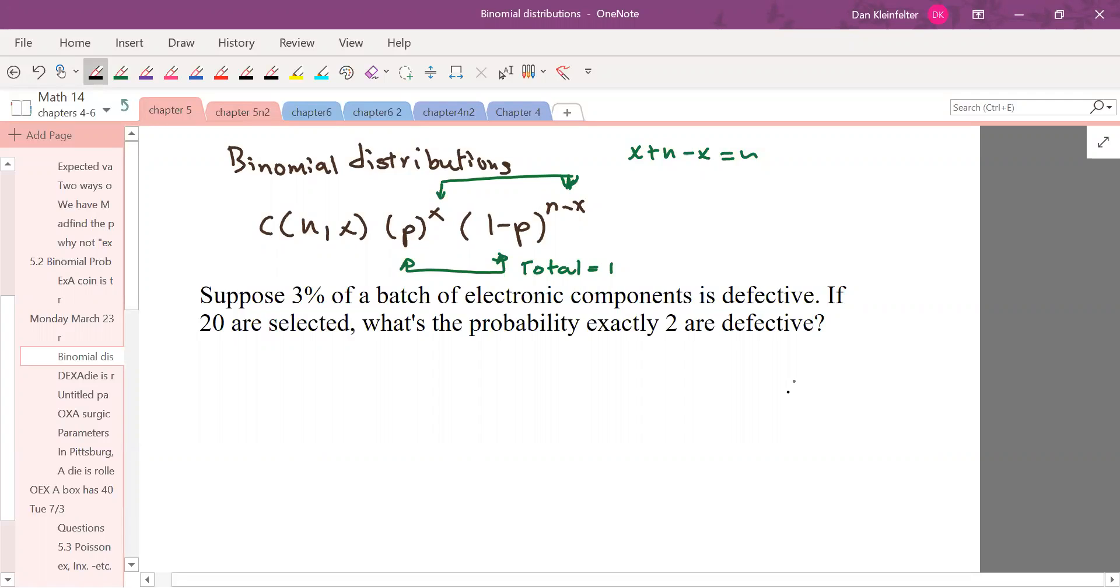All right. So here we have 20 of the components selected. And we want two to be defective. The probability of any one component being defective is 0.03. That's our 3%. That's going to occur twice. The remaining 18 will be not defective and that will occur with probability 0.97. Okay. So that is the setup.